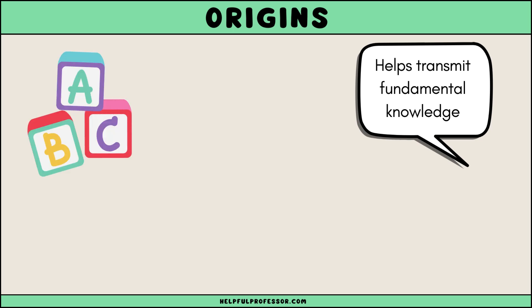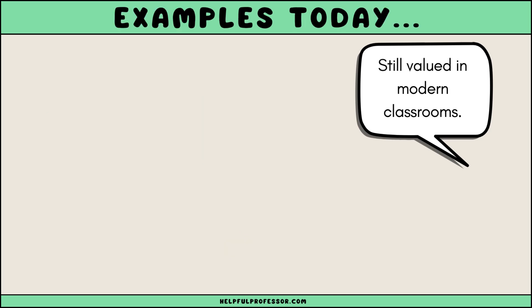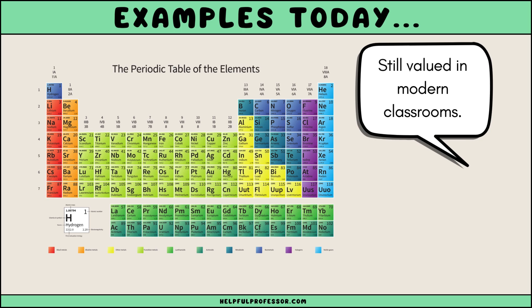This foundational knowledge includes such subjects as the alphabet, numbers, and later, complex formulas. Consider how rote learning operates in modern classrooms. For example, when students learn the periodic table, they often memorize elements and their properties through repeated exposure and recitation.